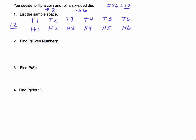We listed them all out, but even without doing so we could have determined there are twelve items in our sample space. Now what we want to do is find the probability of getting an even number. Remember, probability equals the number of favorable outcomes — those that describe this situation — divided by the total number of elements in the sample space.